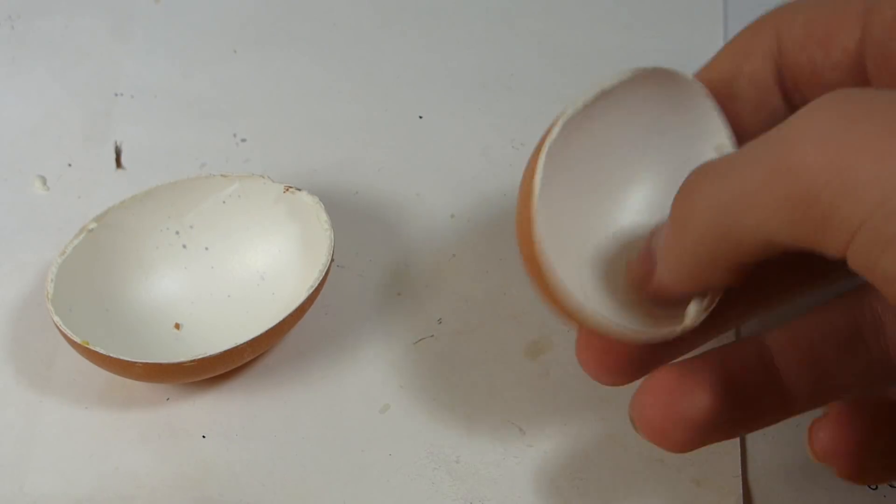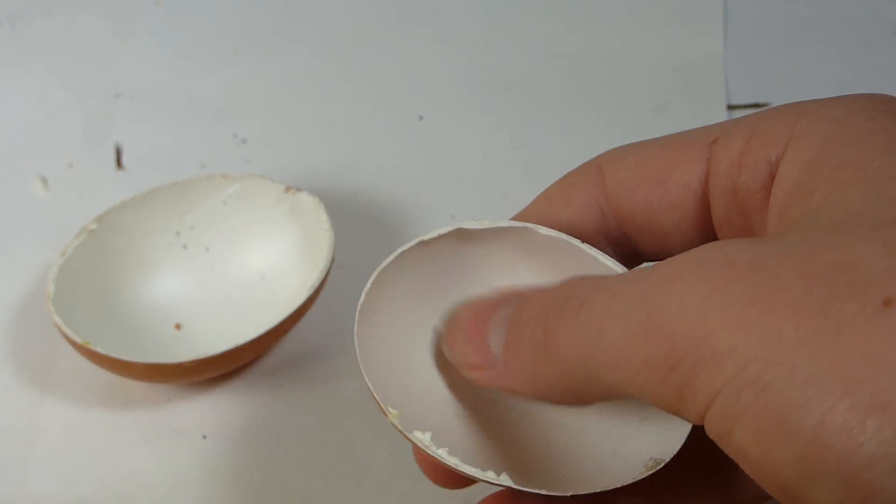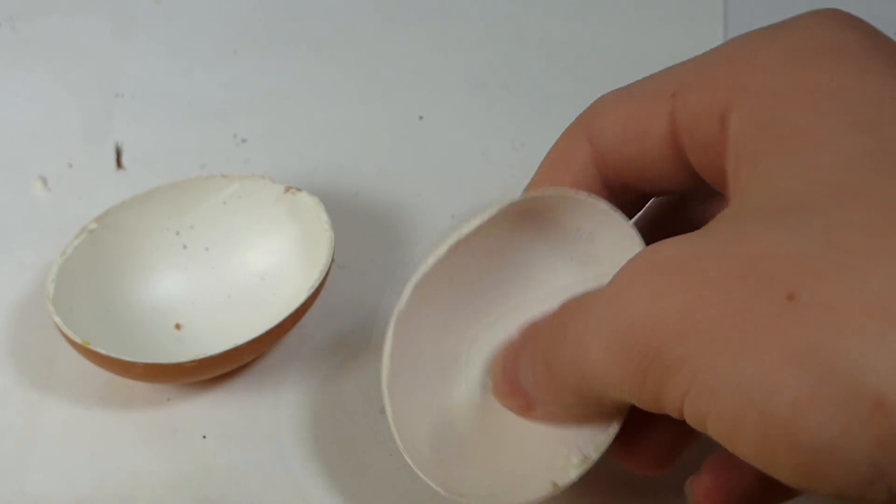So I've let this egg shell sit overnight so it can completely dry out, and you know when it's dry when it's all smooth inside and not sticky.